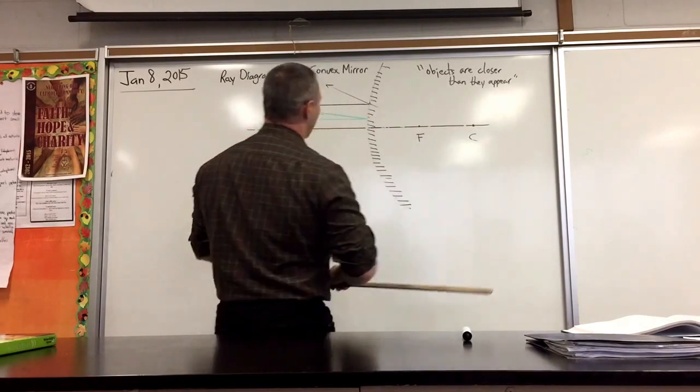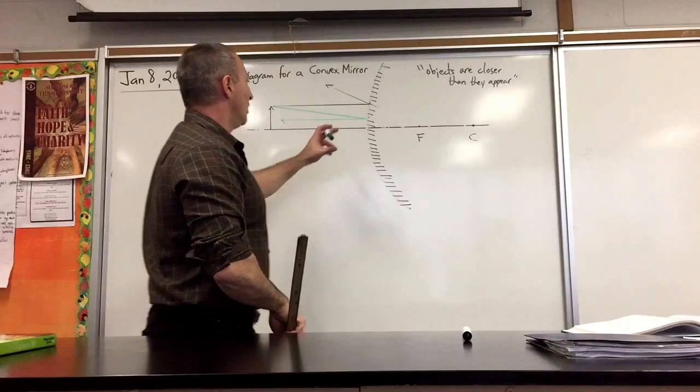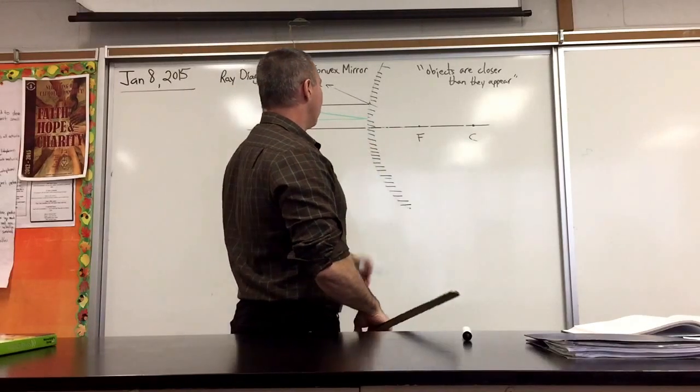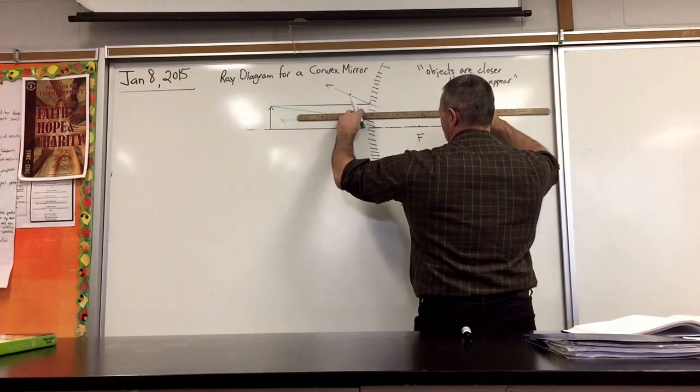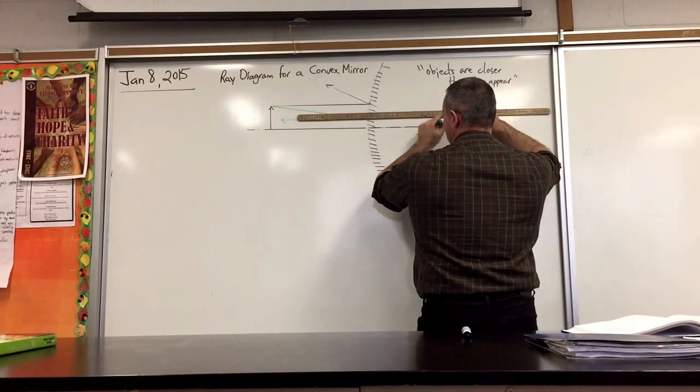To find where the image forms, you simply extrapolate your reflected rays back. The reflected ray for the second one goes into there.